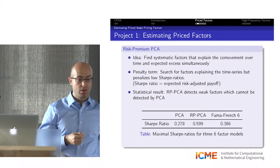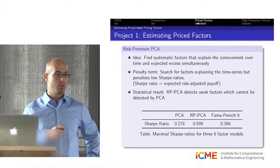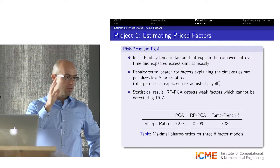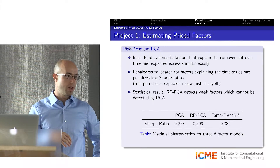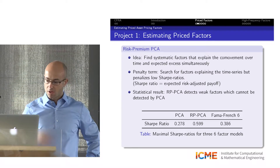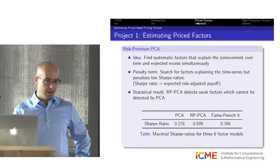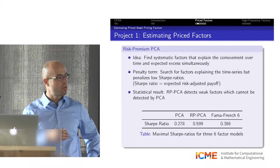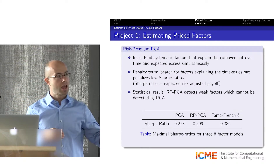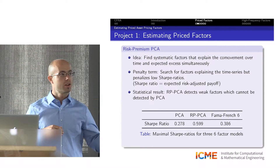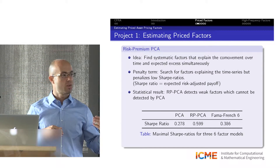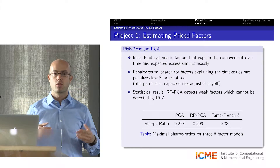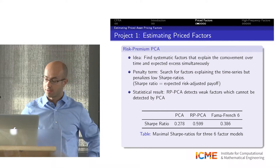In industry, the Fama-French factor model is very famous. It has grown from a three-factor model to a five-factor model. Comparing a six-factor model including the Fama-French five factors plus a momentum factor, the risk-adjusted payoff from that benchmark is again only half as large as what I can get with my approach.